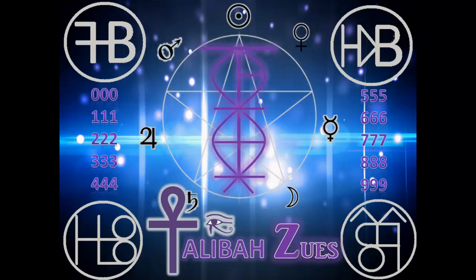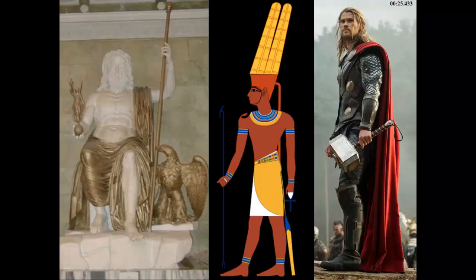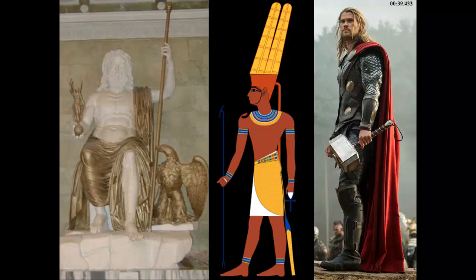Here we see Zeus to the left with the eagle and staff, then Amun-Ra, and Thor — the Norse god. If you look at how Zeus is sitting, it's very similar to how the Baphomet sits — not exactly the same but there's a distinct similarity. Things filter down through cultures: for example, even the Christians have the cross, yet the Egyptians had the cross before the Christians did.